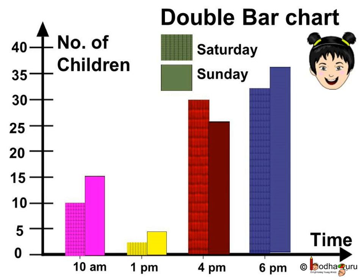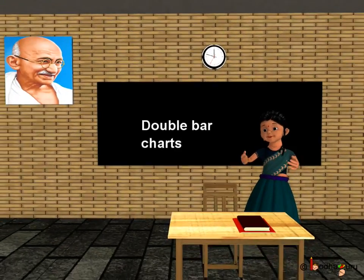Now you know, a double bar chart is an interesting way to represent and compare data. To reiterate: we used double bars of uniform width adjacent to each other without any gap to represent the data, and the length of the bar indicates the value of the data — here representing the number of children in the park at different times. And don't forget, we have placed the bars at equal distance. That's all for now. Bye-bye children.